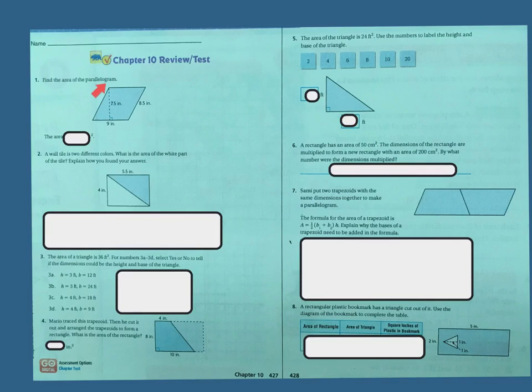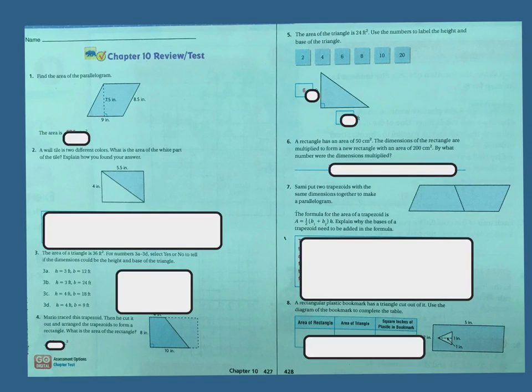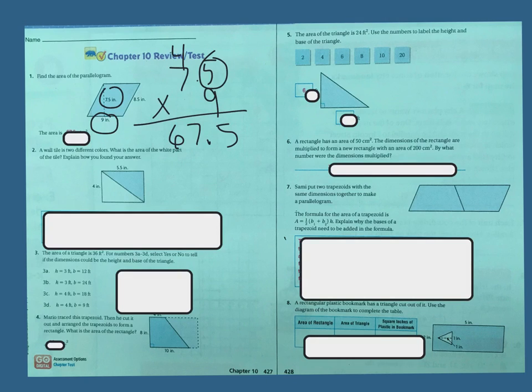Find the area of the parallelogram. Remember, a parallelogram is base times height. In this case, my base is 9 inches and my height is 7.5 inches. So I'm going to multiply those together. 9 times 5 is 45, 9 times 7 is 63, plus 4 is 67. And then I have one decimal space here, so I'm going to put my decimal there. The answer should be 67.5.